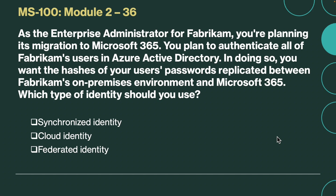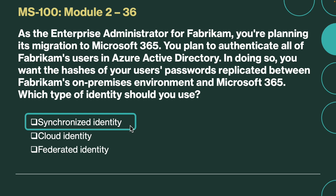Next question. As the enterprise administrator for Fabricum, you are planning its migration to Microsoft 365. You plan to authenticate all of Fabricum's users in Azure Active Directory, and you want the hassle of your users' passwords replicated between Fabricum's on-premises environment and Microsoft 365. Which type of identity should you use? The correct answer is synchronized identity. Synchronized identities are authenticated in Azure Active Directory using hashes of user passwords that are synchronized between the on-premises environment and Microsoft 365.